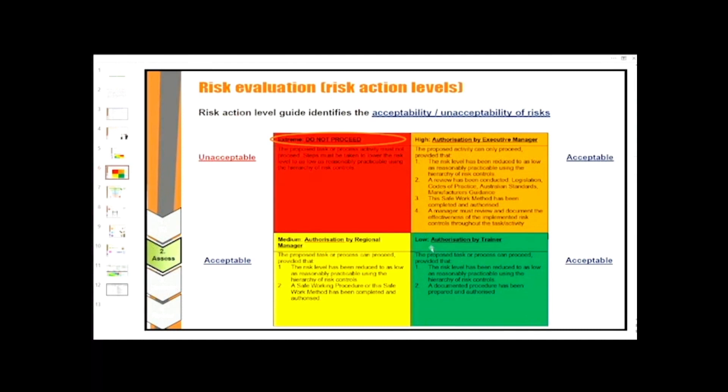When the level is low, the proposed task or process can proceed provided that the risk level has been reduced to as low as reasonably practicable using the hierarchy of risk controls. A documented procedure has been prepared and authorized.